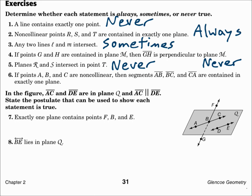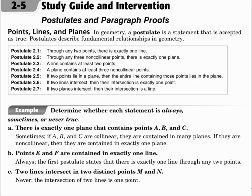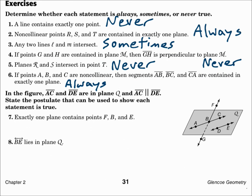Number six: if points A, B, and C are non-collinear, then segments AB, BC, and CA are contained in exactly one plane. This uses two of the postulates. First, through any three non-collinear points there is exactly one plane, so we know those three points are in one plane. We also know that if two points lie in a plane, then the entire line containing those points lies in the plane. So if those three points are in the one plane, then the segments drawn between them are also in the plane. That statement is always true. Make sure you study those postulates and know them without having to refer to them, because those postulates and all other postulates are the building blocks of the rest of geometry.